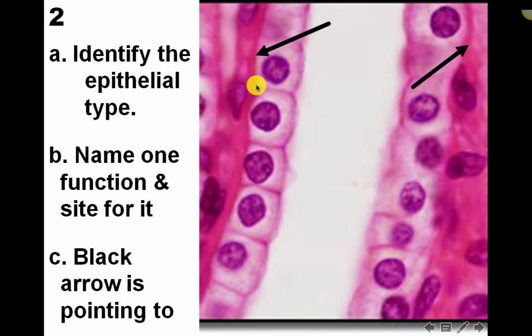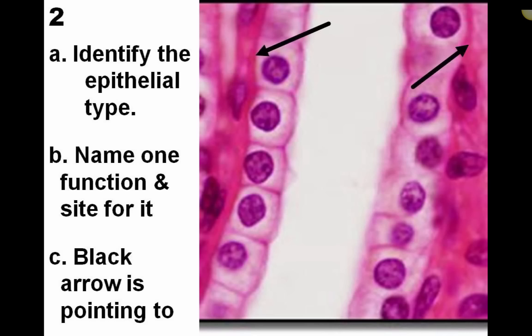The black arrows point to the junction between the epithelium and the connective tissue beneath it, which is called the basement membrane. The epithelium must always sit on the surface of the connective tissue.